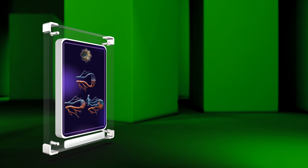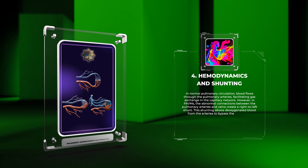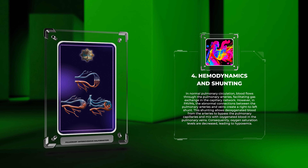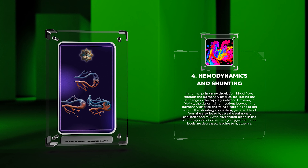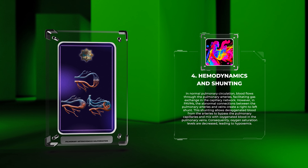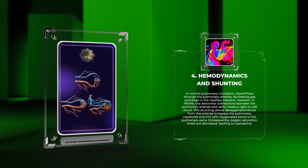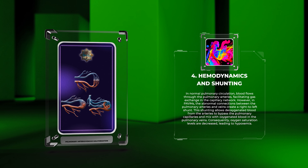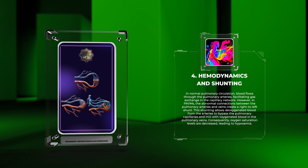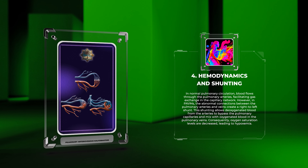In normal pulmonary circulation, blood flows through the pulmonary arteries, facilitating gas exchange in the capillary network. However, in PAVMs, the abnormal connections between the pulmonary arteries and veins create a right-to-left shunt. This shunting allows deoxygenated blood from the arteries to bypass the pulmonary capillaries and mix with oxygenated blood in the pulmonary veins. Consequently, oxygen saturation levels are decreased, leading to hypoxemia.